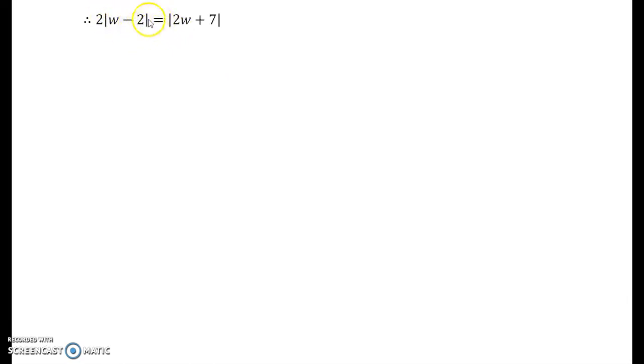Now, in order to remove the mod sign, I will have to square both sides. So I square it on both sides. I get 4(|w-2|²) = |2w+7|². Now, in order to solve this mod square, we use the property that |z|² is nothing but zz̄. This will become (w-2)(w̄-2) on the LHS, and on the RHS also the same thing: (2w+7)(2w̄+7).